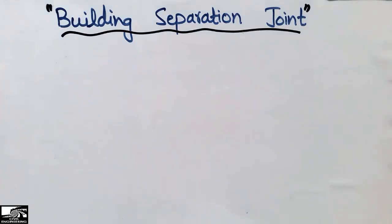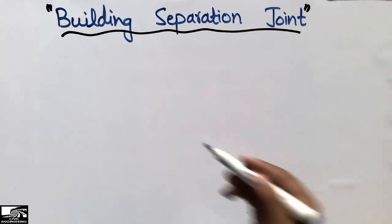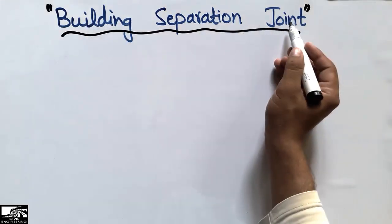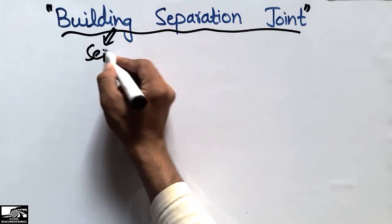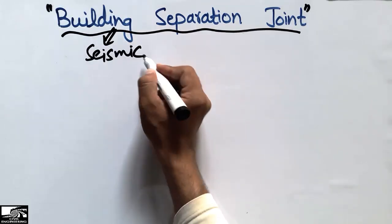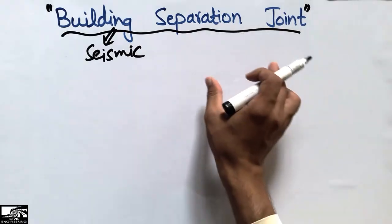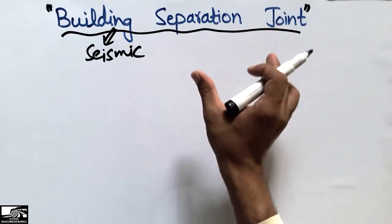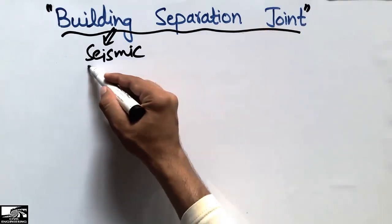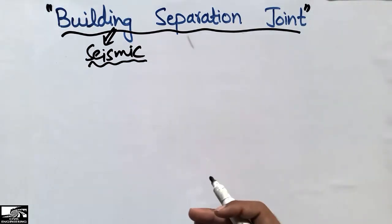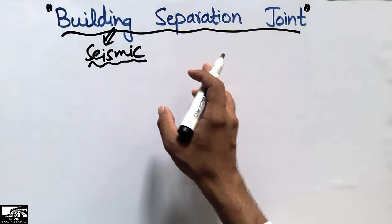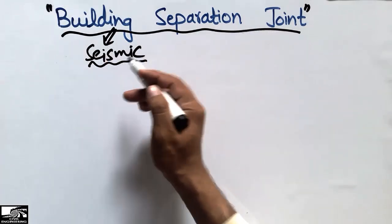Hello guys, welcome back to the civil engineering YouTube channel. Please subscribe for daily civil engineering videos. Today our lecture is about the building separation joint, also called the seismic separation joint. This joint is provided between two buildings to avoid earthquake damage.